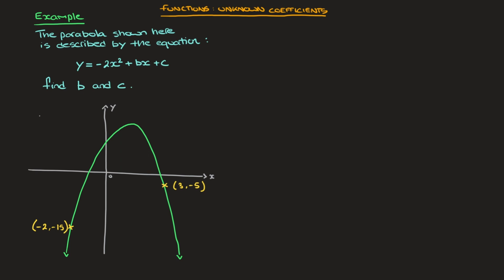Furthermore, since we have two unknowns, we're going to need two equations, and for that we need to be given two bits of information, which is the case here. Indeed, we're given the coordinates of two points along this curve's length, and so using these point coordinates alongside the equation we're given, we're going to derive a pair of simultaneous equations for b and c. And here's how.